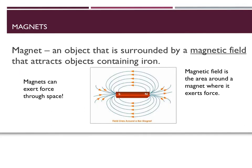A magnet is an object surrounded by a magnetic field — the area around the magnet where it can exert force or affect things. Magnets can exert force through space, meaning they don't have to touch something to have an effect on it. You've seen this before: get two magnets close to each other and they snap together or push apart. That's what a magnetic field and a magnet are.